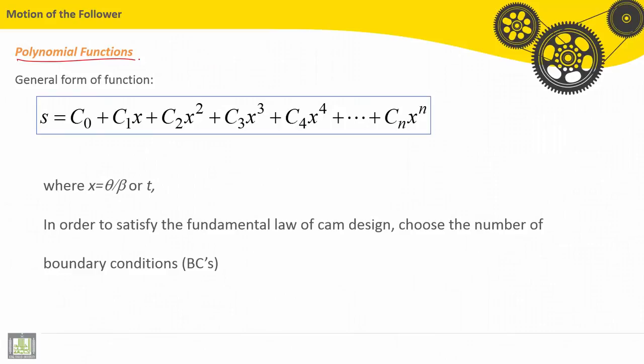The general form of function for polynomial function is as follows, where x is theta over beta, or it is t. In order to satisfy the fundamental law of CAM design, we have to choose the number of boundary conditions.